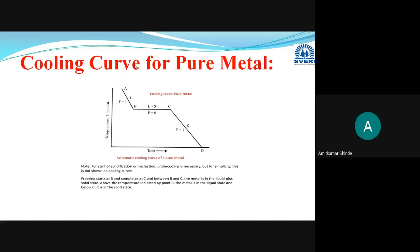This is the total explanation for the cooling curve for the pure metal. Examples include iron, gold, copper, silver — any pure metal can be used here. This is the first type of the cooling curve. If you are having any difficulty, you can ask me.